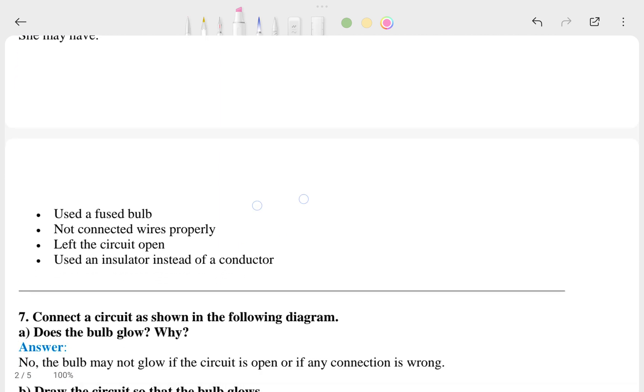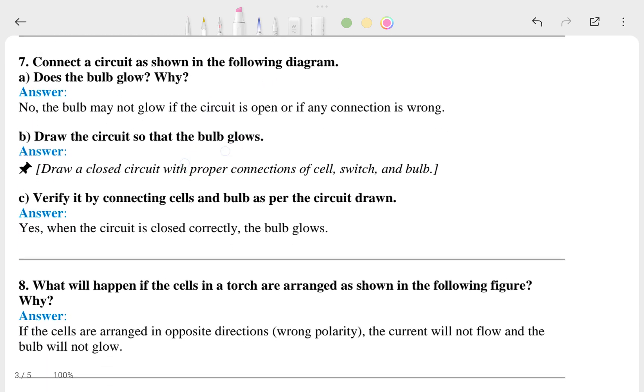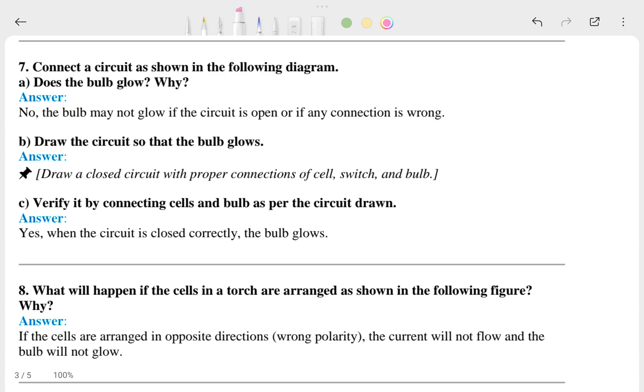If it is clear to you, then let's talk about the seventh one. A circuit has - in the following diagrams, does the bulb glow and why? The first answer is this one, second option is this, and C answer is this one. Alright.